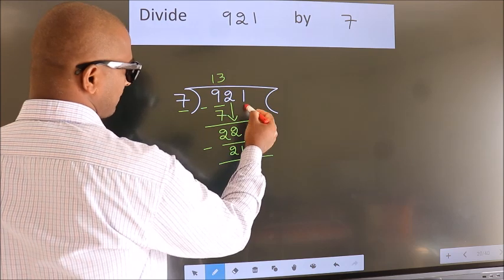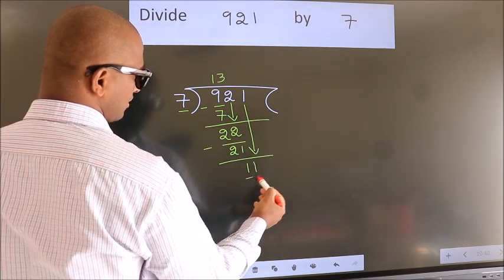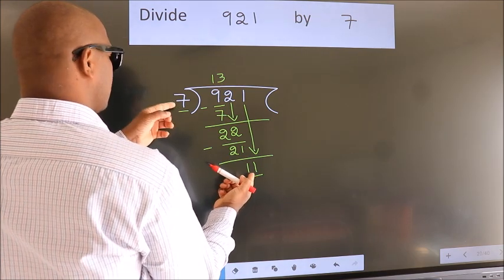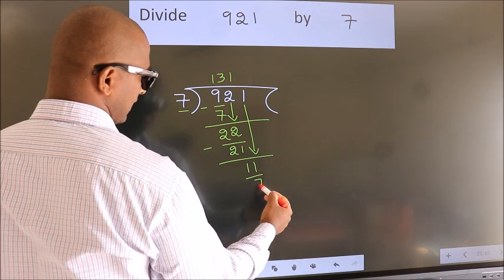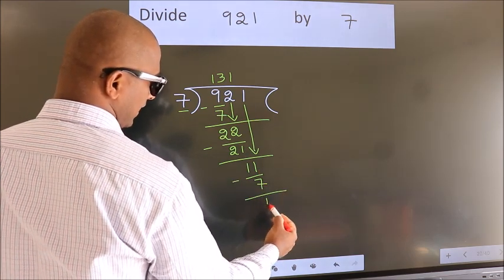After this, bring down the beside number. So 1 down, so 11. A number close to 11 in 7 table is 7 once 7. Now we subtract. We get 4.